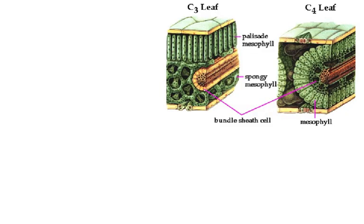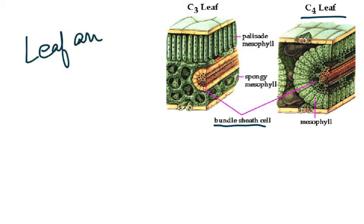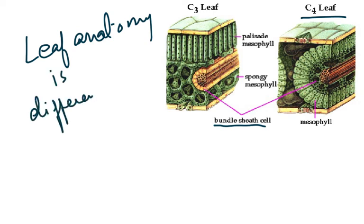Looking at the structure of the two leaves — the C3 leaf and the C4 leaf — you can see the arrangement is very different. Bundle sheath cells exist in C3 leaves but are minimal, whereas in C4 leaves the bundle sheath cells are huge. Both have mesophyll cells, but in C3 plants there is palisade mesophyll and spongy mesophyll. So the leaf anatomy is distinctly different between C3 and C4 plants.